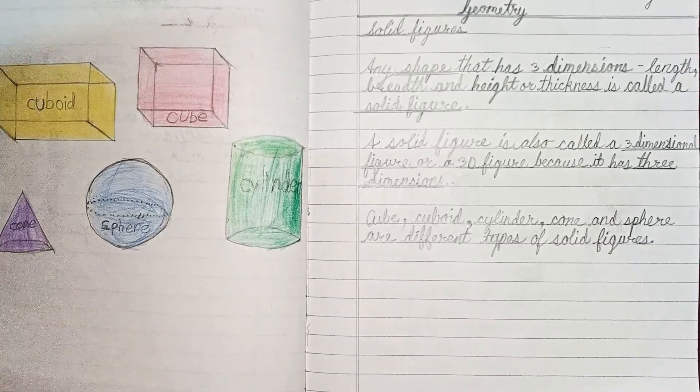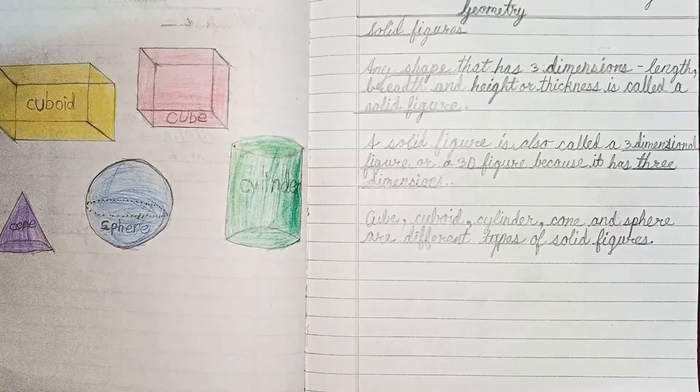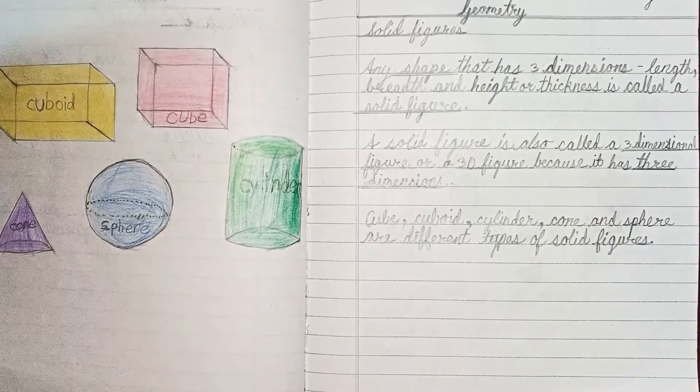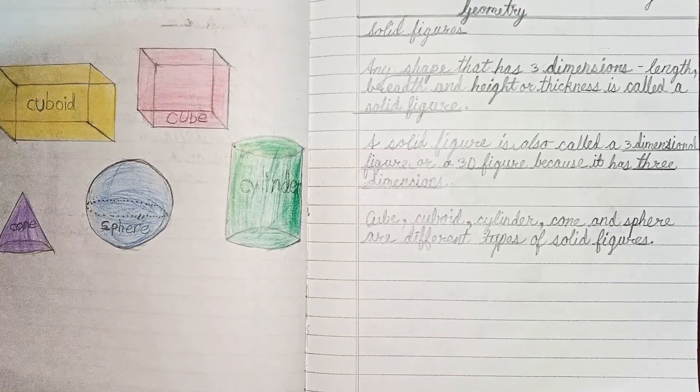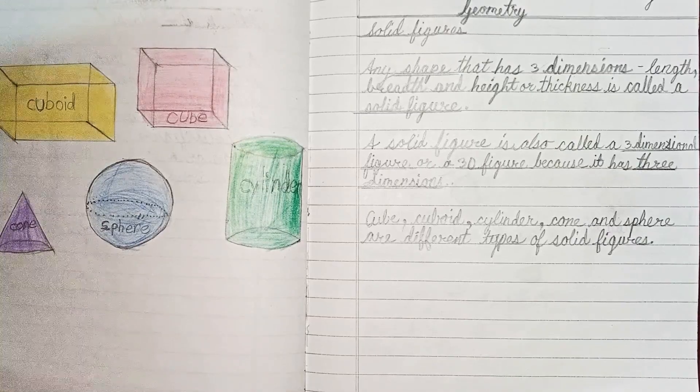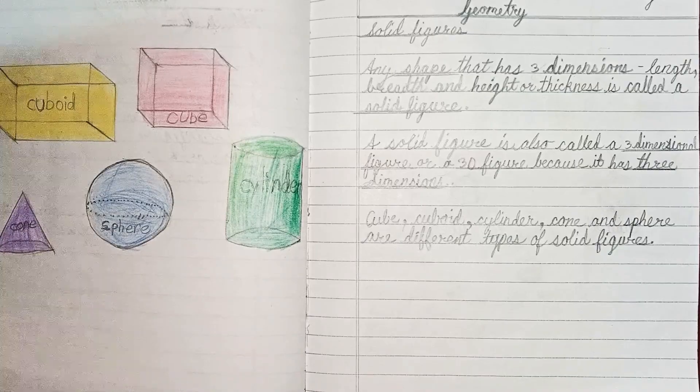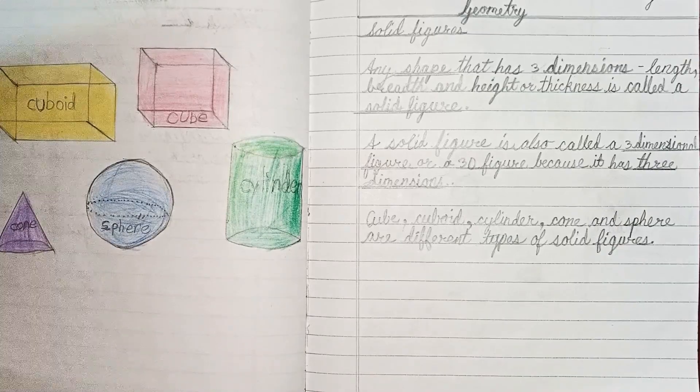A solid figure is also called a three-dimensional figure or a 3D figure because it has three dimensions. Any shape that has three dimensions - length, breadth and height or thickness - is called a solid figure.